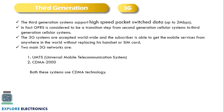The third generation system supports high speed packet switched data, which is very important to understand. A high speed packet switched data is introduced in 3G which goes up to 2 Mbps — very less in 2G. In 2G, GPRS is considered a transition step from 2G to 3G. Since the speed is increased in 3G compared to 2G, the data transmission achieves a higher data rate of 2 Mbps per second. It is accepted worldwide and subscribers are able to get mobile service from anywhere in the world — global roaming is provided.